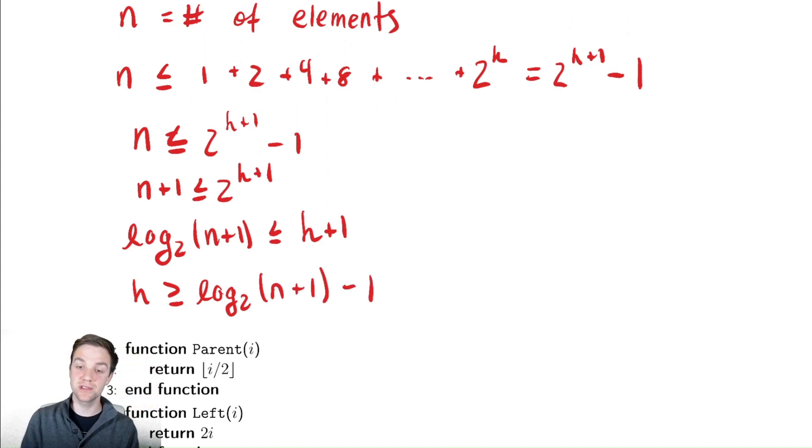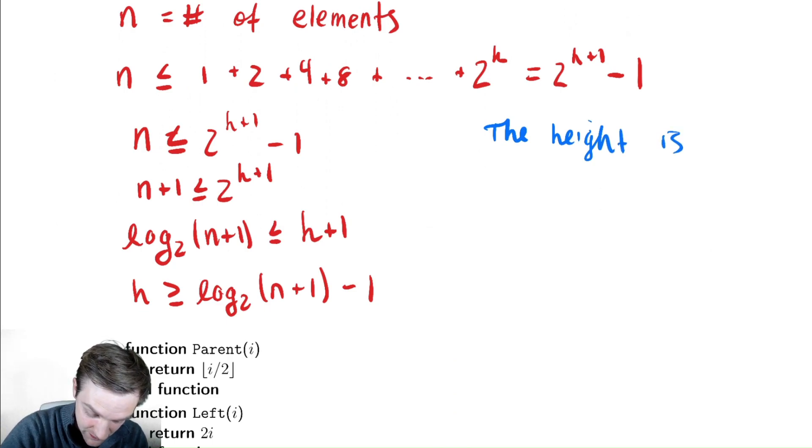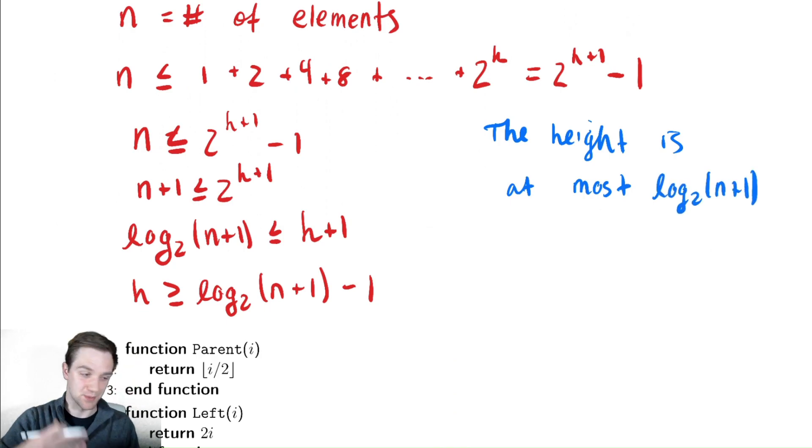So the height is at most log base two of n and this is a very convenient fact. Lots of our algorithms will be bounded by the height of the tree or that will play a role. So this is a convenient estimate to have. Let's even write it down. The height is at most log base two of n + 1. I'm ignoring the minus one for now to save myself a little bit of pain. We can keep track of it later if we so choose.